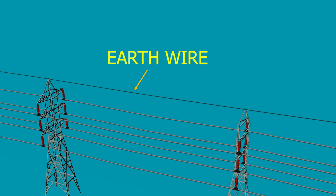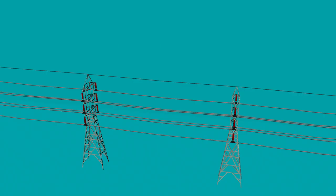First we explain the earth wire or shield wire, sometimes also referred as sky wire. Earth wire is used for the protection of main high voltage power transmission lines from environmental effects such as lightning strokes.